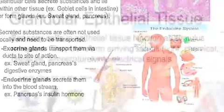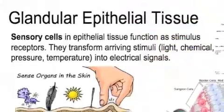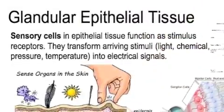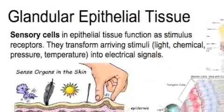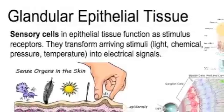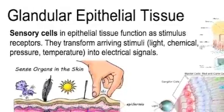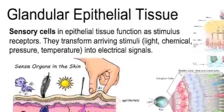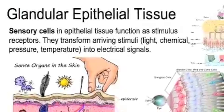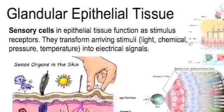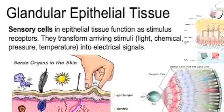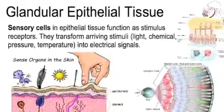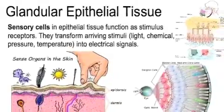Finally, sensory epithelial tissue: sensory cells in the epithelial tissue function as stimulus receptors. They transform arriving stimuli such as light, chemicals, pressure, and temperature into an electrical signal, and then send those signals mostly to the brain for processing.